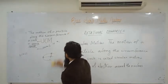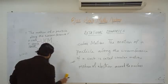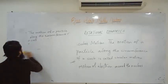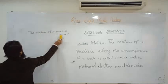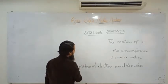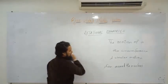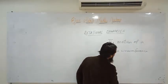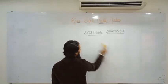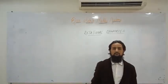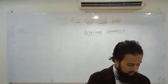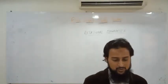Uniform circular motion is the motion of a particle along the circumference of a circle. It has two types: uniform circular motion and non-uniform circular motion. Motion with the same speed is UCM; motion with changing speed is non-UCM.